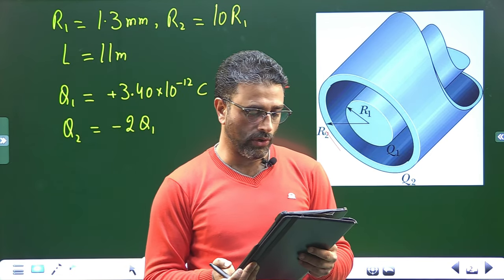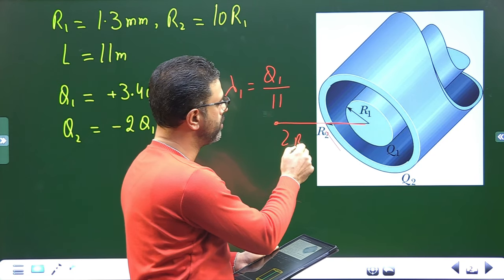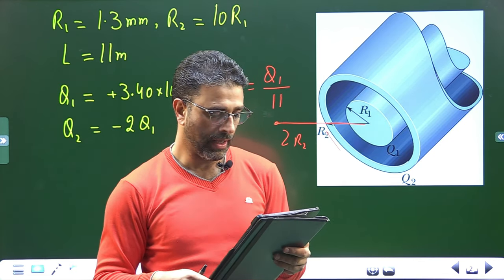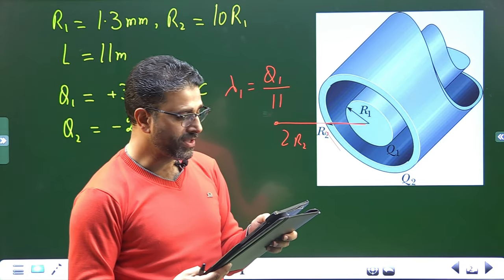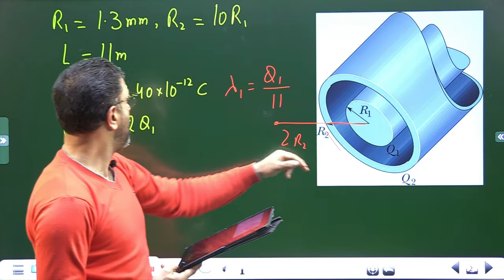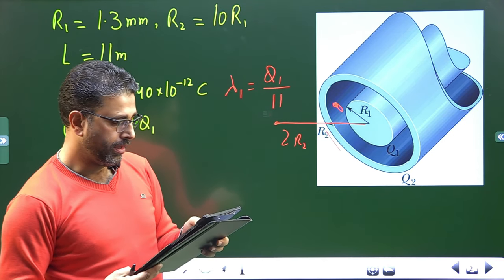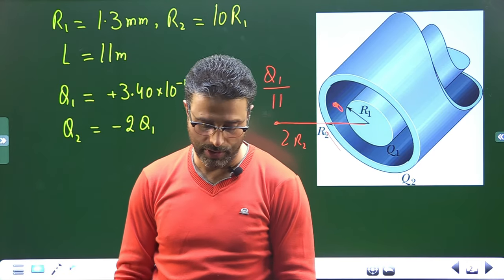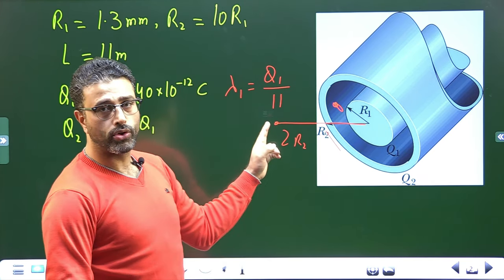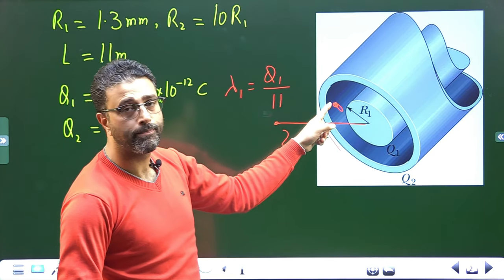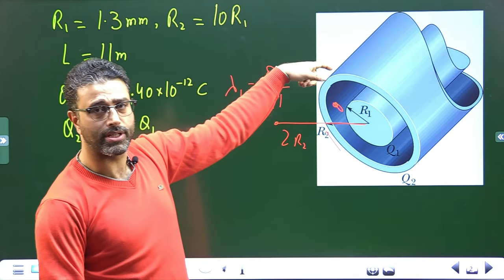We need to find four things: first, the magnitude and direction of the electric field at radial distance r equal to 2r2 — which is outside the cylindrical shell. Second, the field at r equal to 5r1, which is somewhere in between the rod and the shell since r2 is 10r1. Third, the charge on the interior surface of the shell, and fourth, the charge on the exterior surface of the shell.